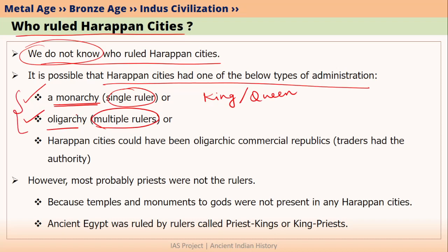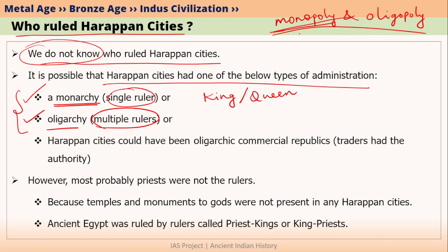These terms are important not only here but also in polity, economy, and other areas. For example, you must have heard of the terms monopoly and oligopoly, which are mostly used in economics. If there is a company which is totally dominating the entire market for a particular product, then we say that company has a monopoly over that market.